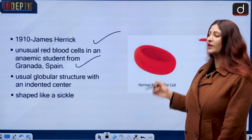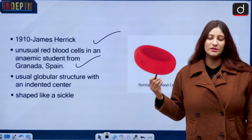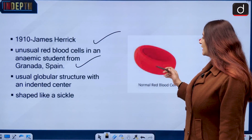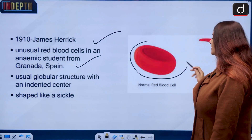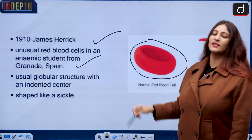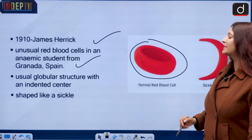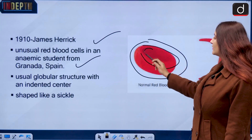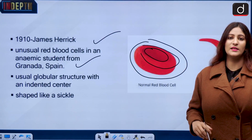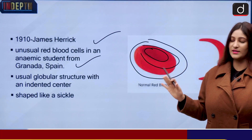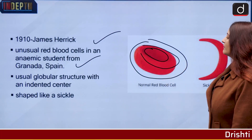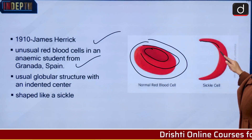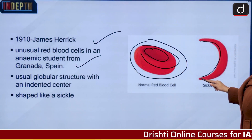When James Herrick was studying this student's RBCs, he thought there is something unusual about these red blood cells. Generally, red blood cells are donut-shaped and they have a dent in between. But in sickle cell, the red blood cells become C-shaped.